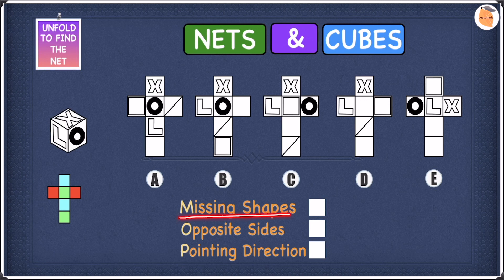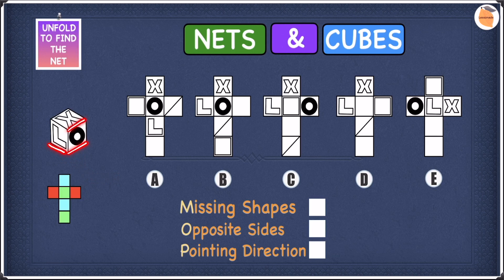So let's start by looking at missing shapes. To do this let's have a look at the cube we have on the left and in this cube we have three shapes. We have an O shape, an L, and an X shape. So these are the three shapes we have. So if we find a net in which that does not contain all of these three shapes then we cross the net off.